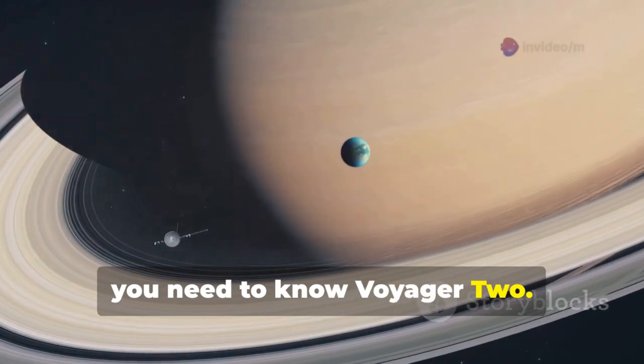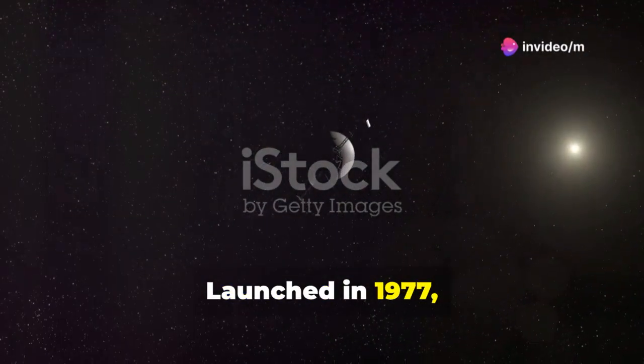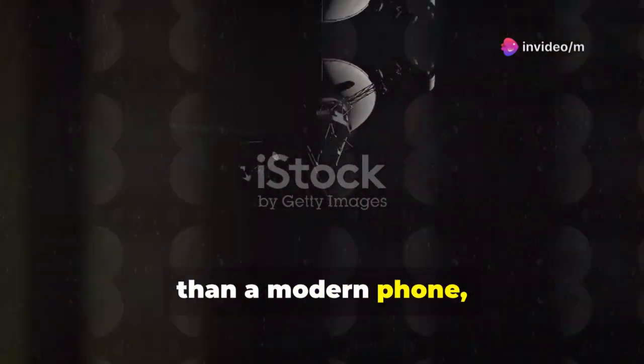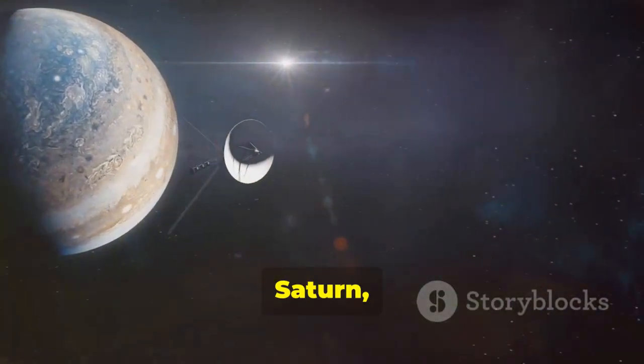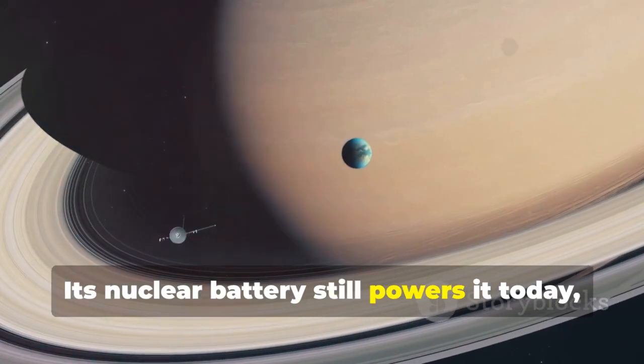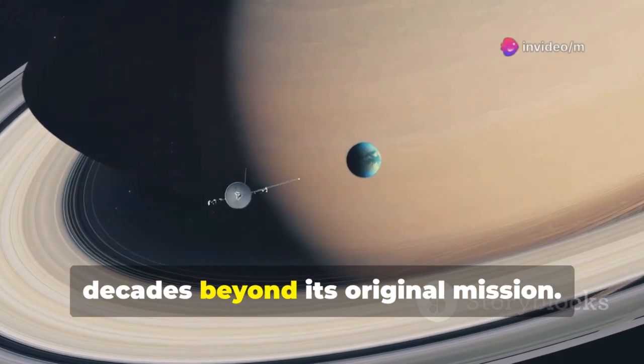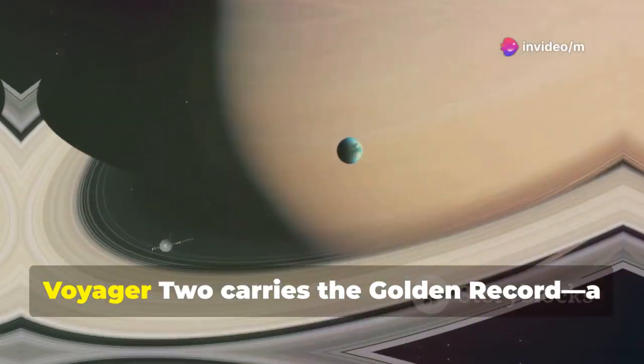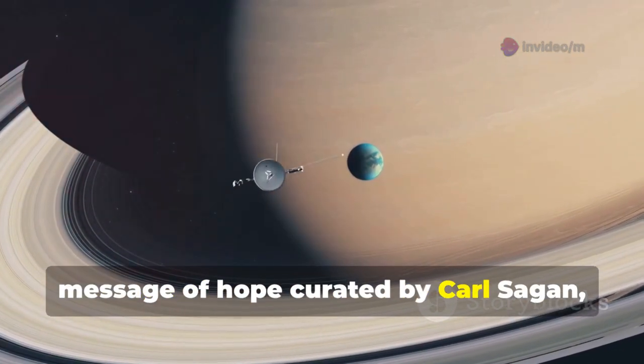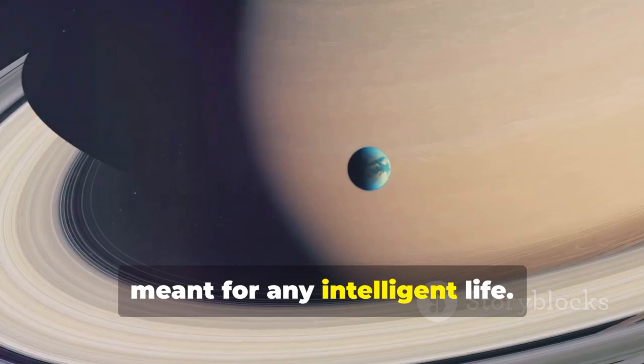To grasp the magnitude of this discovery, you need to know Voyager 2. Launched in 1977, it was built with less computing power than a modern phone, yet it journeyed past Jupiter, Saturn, Uranus, and Neptune. Its nuclear battery still powers it today, decades beyond its original mission. Voyager 2 carries the golden record, a message of hope curated by Carl Sagan, meant for any intelligent life.